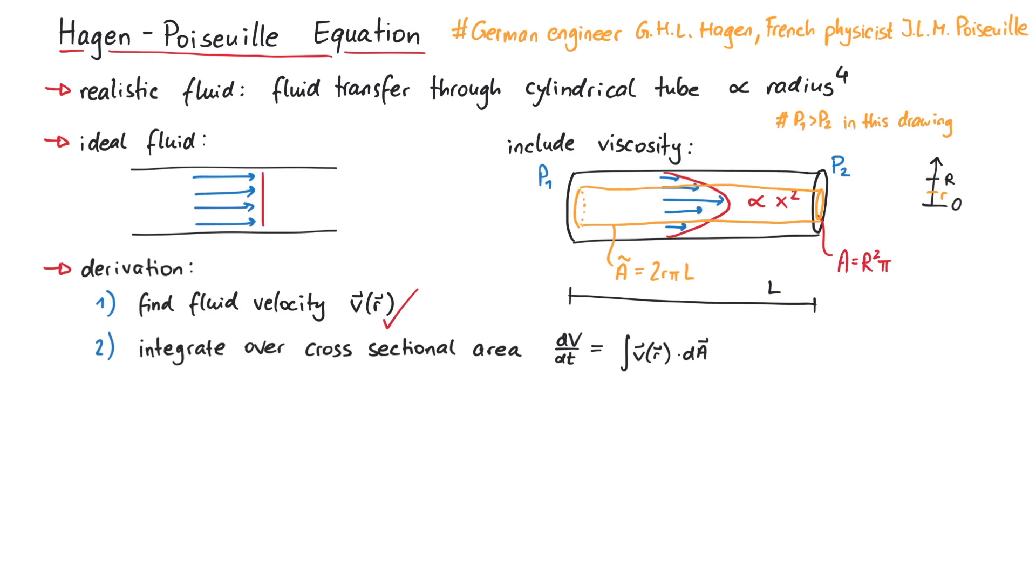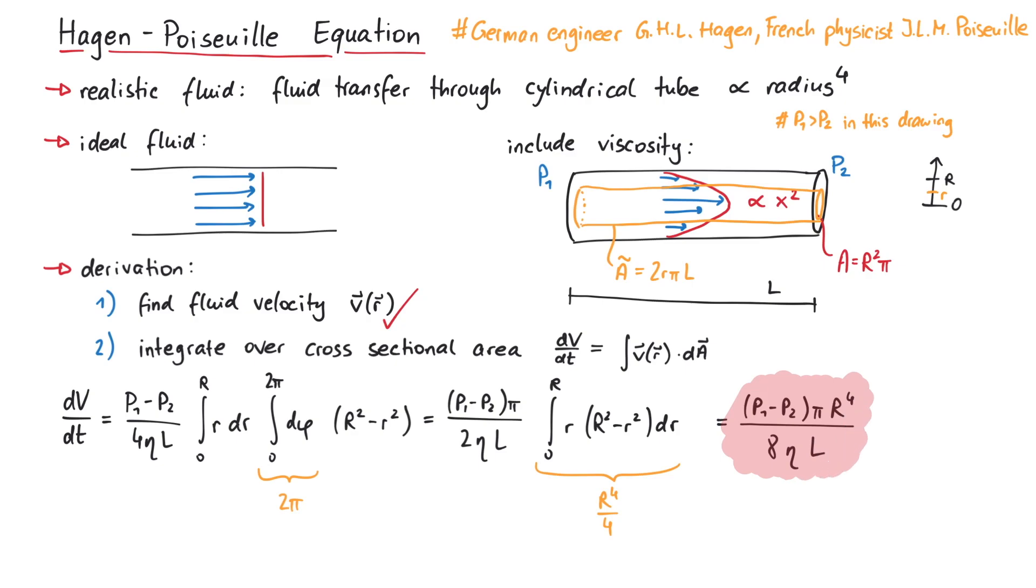In polar coordinates, dA is given by r dr d phi. The integration over phi gives us 2 pi, and the integration over r results in uppercase R to the power of 4 over 4. Now we've got the Hagen-Poiseuille equation. The flow of a liquid in a cylindrical tube is proportional to the radius to the power of 4.